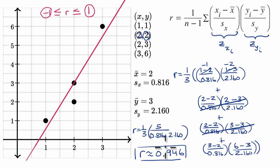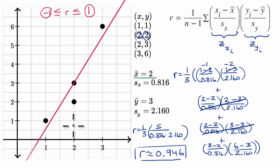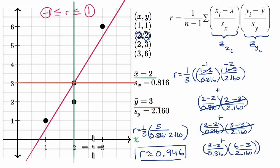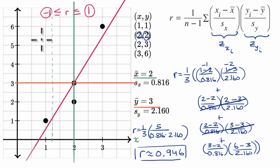Now I want to focus on the intuition: what was actually going on here with these z-scores, and how does taking products of corresponding z-scores give us the property where r of one means strong positive correlation and r of negative one means strong negative correlation? Let's draw the sample means. The x sample mean is two — this is x equals two. And our y sample mean is three — this is the line y equals three. Now we can also draw the standard deviations. The standard deviation for x is 0.816, so going 0.816 below the mean puts us around here — that's one standard deviation below — and one standard deviation above is around here.